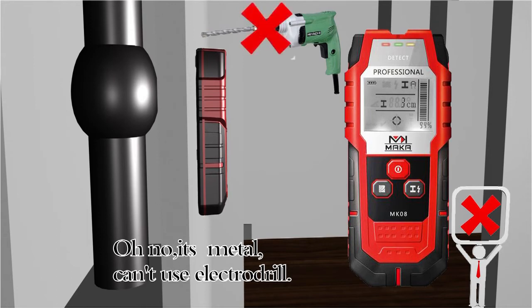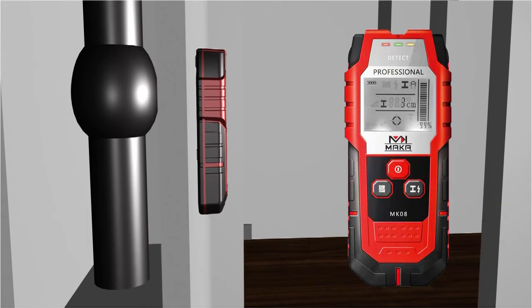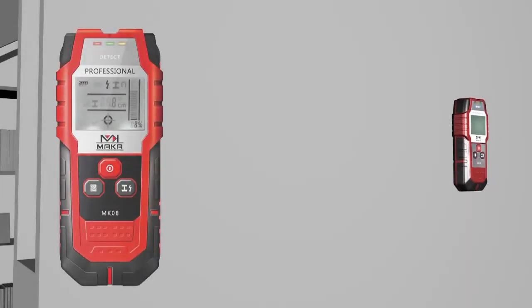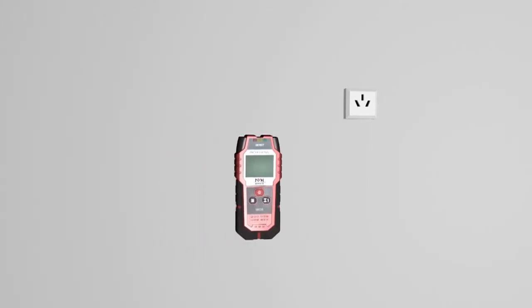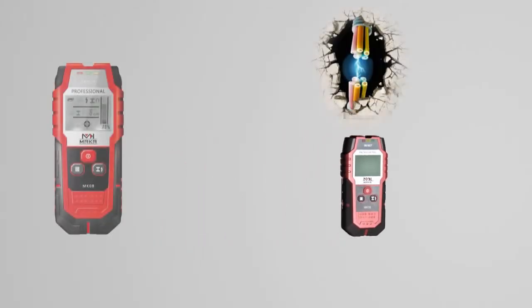When the program judges that the received signal reaches its maximum, then the metal article is right below the center of detector. Also, the depth detection model will display detection depth value following detection operation.